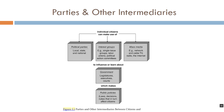The three main types of political intermediary operating in American politics today are the political party, the interest group, and the mass media. A political party is a group of political activists who organize to win elections, operate government, and gain direct control over public policy. Political parties in our country are primarily electoral organizations — their main goal is to win elections so they can operate government and have a direct hand in shaping the policies that govern our country.